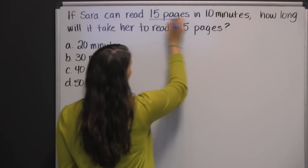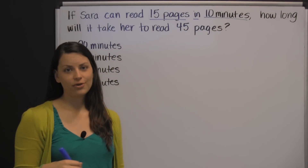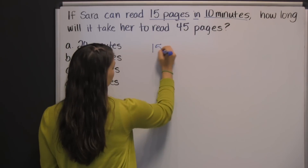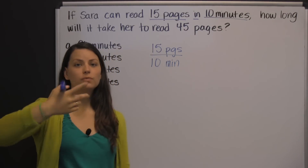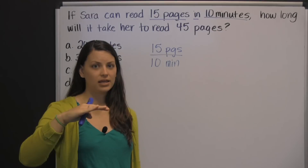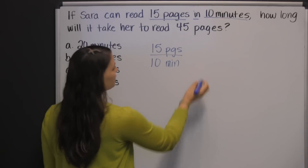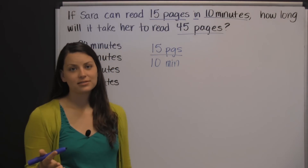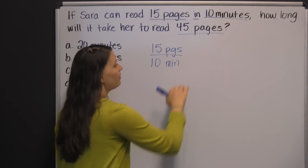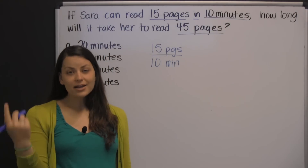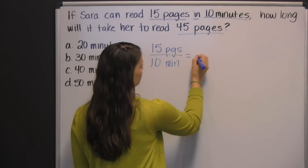Here we have a rate — 15 pages in 10 minutes — which can be written as a ratio or a fraction: 15 pages over 10 minutes. Or you could write it in reverse: 10 minutes to 15 pages. Then we have the third piece of information, 45 pages. You see that the units, pages, match one of the units in your first ratio. That needs to be a clue to use a proportion, which is just a ratio that's equal to a ratio.